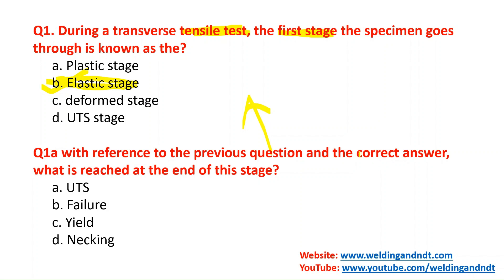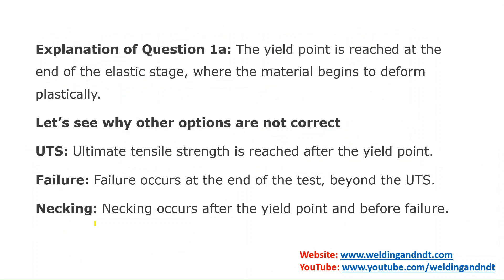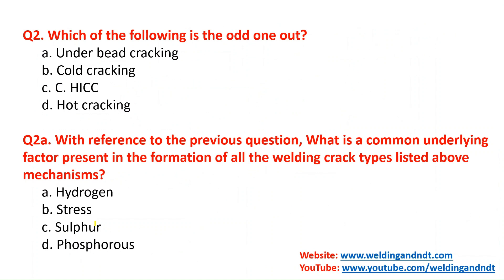The second question asks: with reference to the correct answer (elastic stage), what is reached at the end of this stage? After the elastic stage, yielding will happen. In yielding, the material cannot regain its original shape — this is also called plasticity. So option C, yield, is the correct answer. You can pause the video to read the explanation.